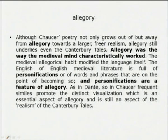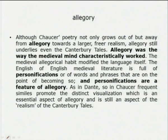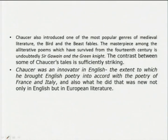Allegory is an extended metaphor. Although Chaucer's poetry not only grows out of but moves away from allegory towards a larger, freer realism, allegory still underlies even the Canterbury Tales. Allegory was the way the medieval mind characteristically worked. Personifications operate at different levels, mostly telling about a moral, mostly going about a religious view. As in Dante, so in Chaucer, frequent similes promote distinct visualization, which is an essential aspect of allegory and still an aspect of realism in the Canterbury Tales.